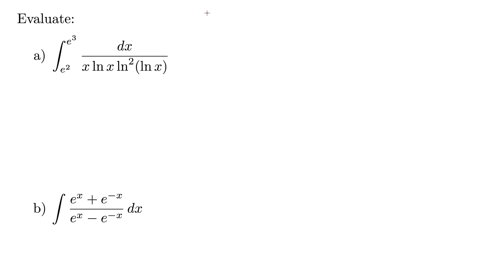Our goal in an integral like this is to find some u and u prime good enough so that we essentially gobble up the whole function with our f(u) and u prime, leaving nothing left but maybe a constant. So we want to find a way to get all the x's into our u's — it comes down to picking a clever u.